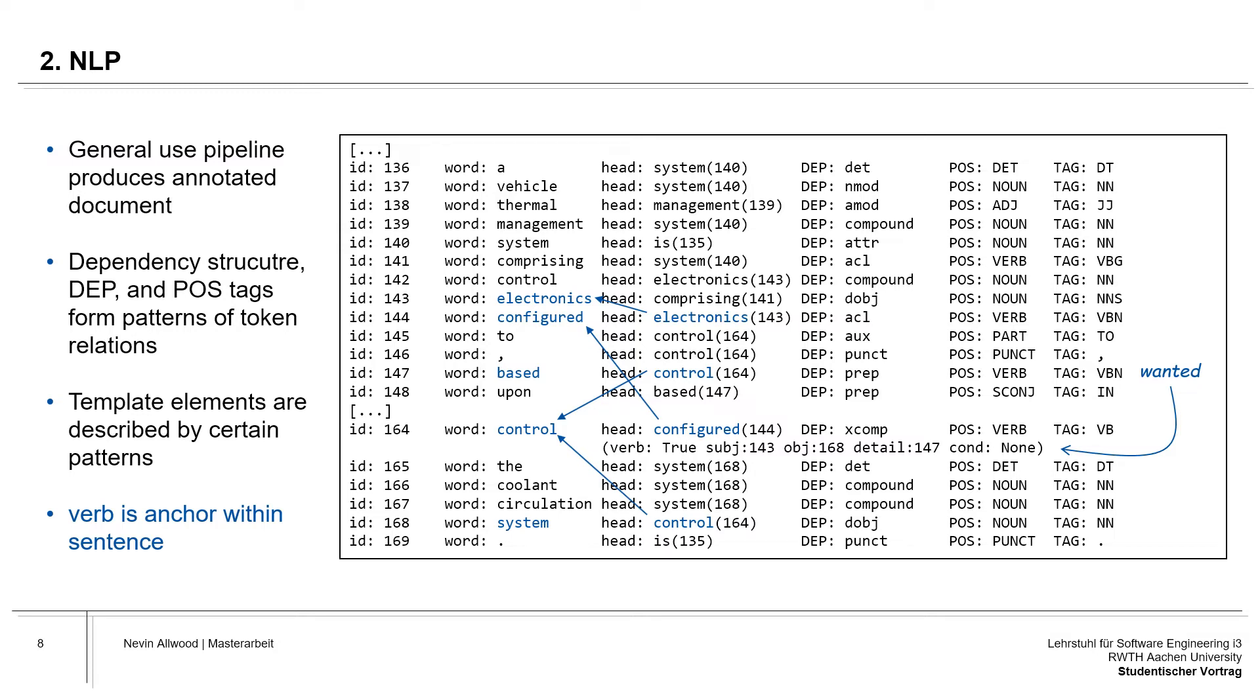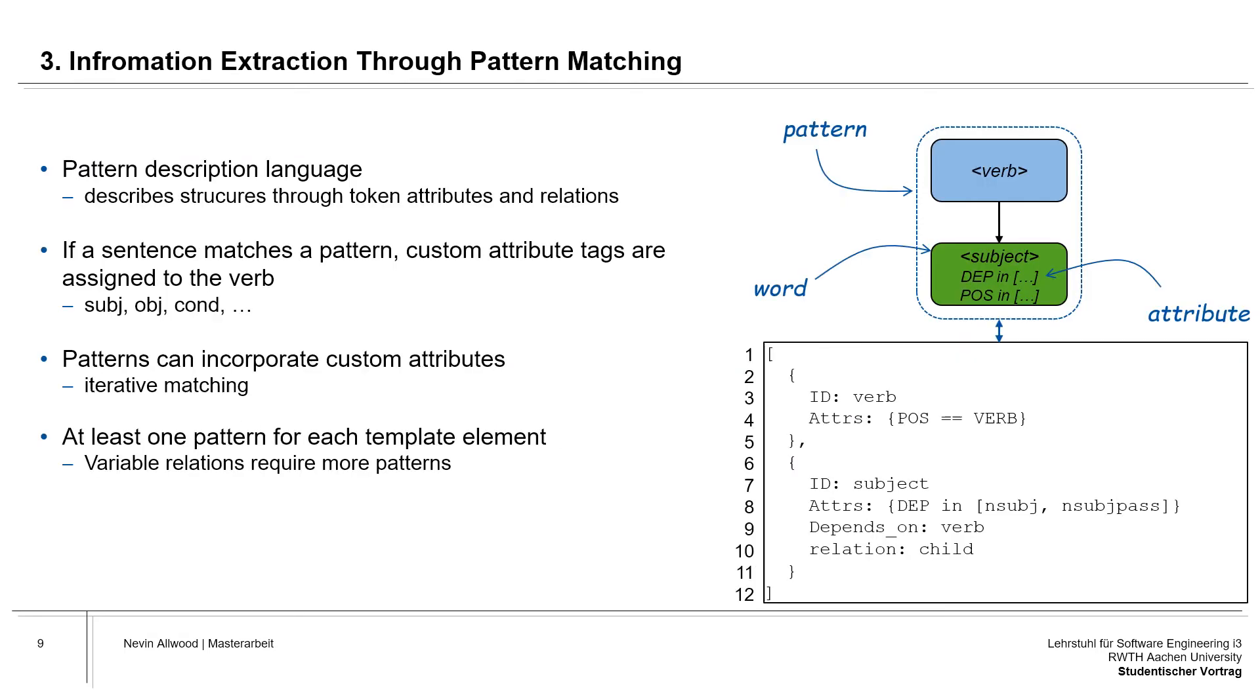In this example, control is related to other relevant words either directly or with at most one word distance within the dependency tree. This means that if verbs were to be additionally tagged with references to all of the words corresponding to template elements that they relate to, all of the information of a single requirement could be extracted as a bundle.